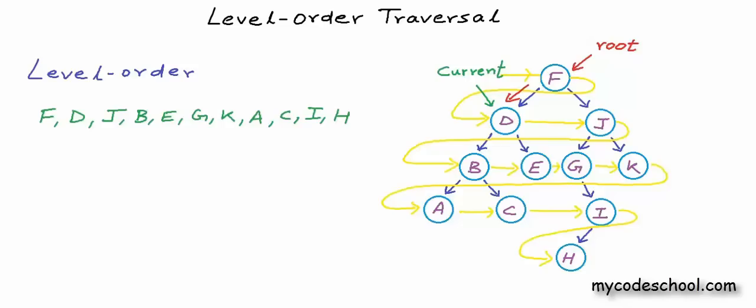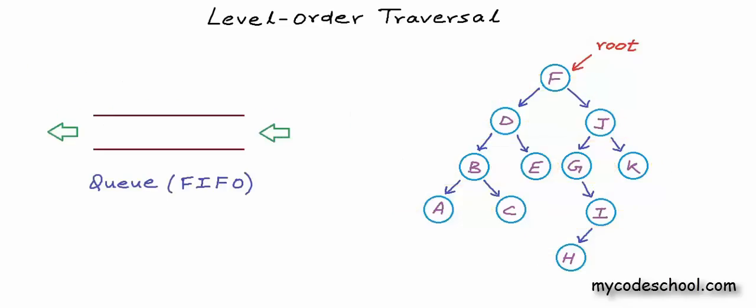So what can we do to traverse the nodes in level order? Clearly we can't go with just one pointer. What we can do is, as we visit a node, we can keep the reference or address of all its children in a queue so we can visit them later. A node in the queue can be called a discovered node — whose address is known to us but we have not visited it yet. Initially we start with the address of the root node in the queue, meaning it is the only discovered node.